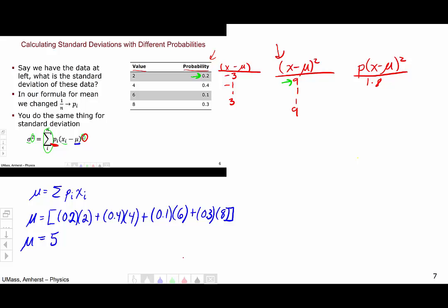Next, I'm going to multiply 1 by 0.4 to get a probability multiplied by x minus mu squared of 0.4, and continuing on 0.1 and 2.7.